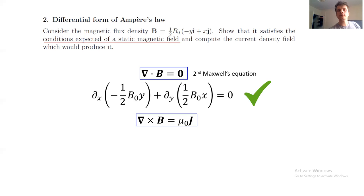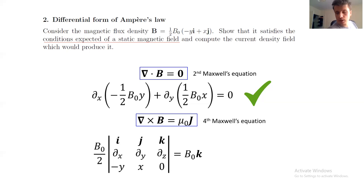Now, the second part of this exercise is about computing the current density of the field that can produce this field. If you apply the definition of the curl, you're going to come to the conclusion that